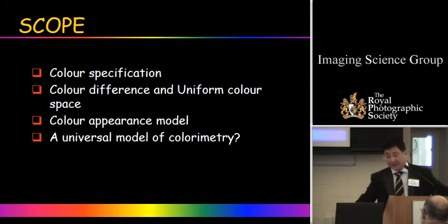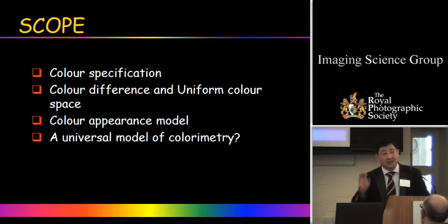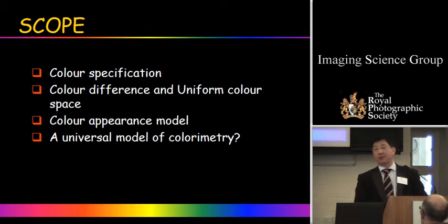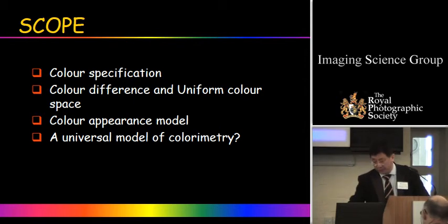My scope today is: what is color science? Basically we're doing three things — color specification, color difference evaluation, and color appearance modeling. And ultimately, is it possible to have a universal color model to look at the world across all applications?